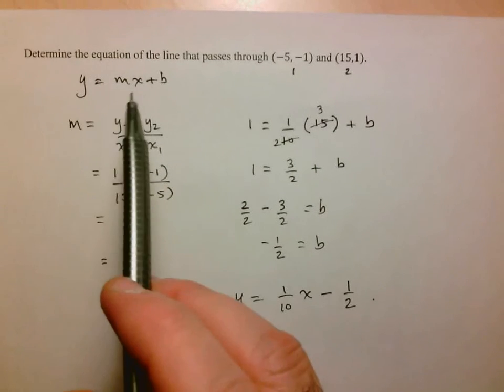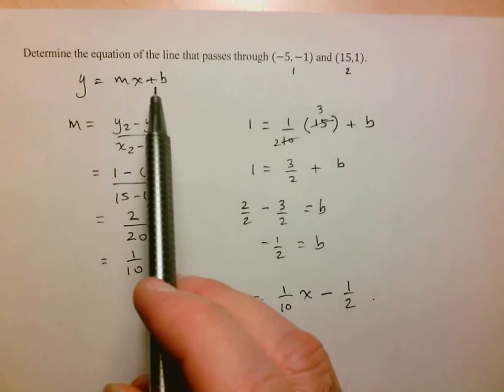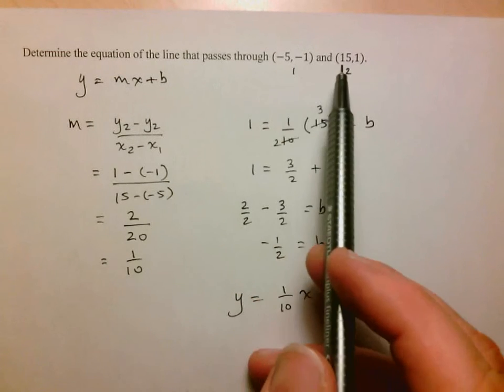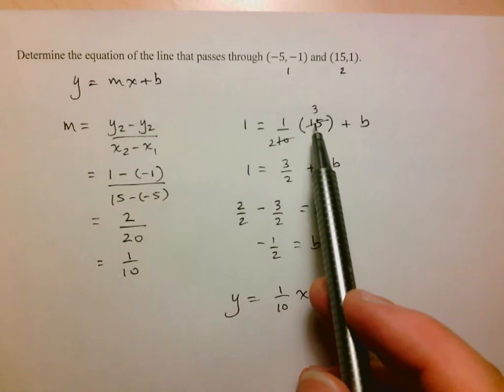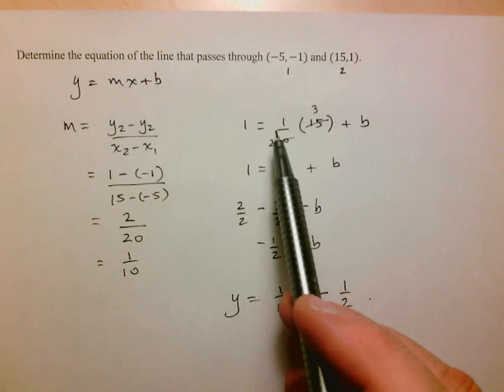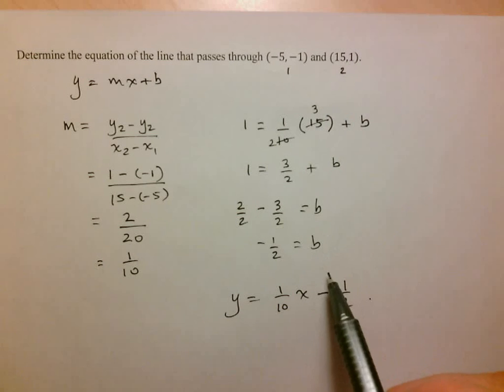So just to recap: y equals mx plus b is the general form of your line. With the two points, you can determine the slope. Once you've determined the slope, you input it and one of the two points into your equation, solve for b.